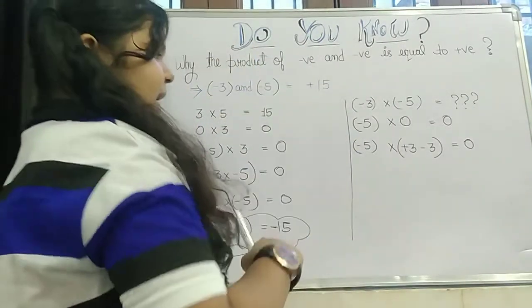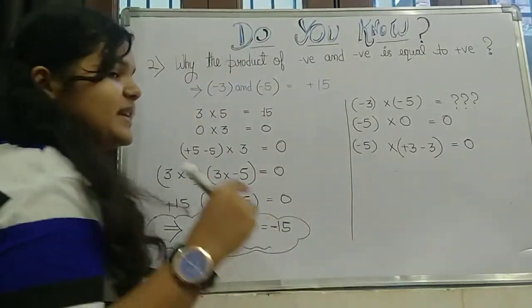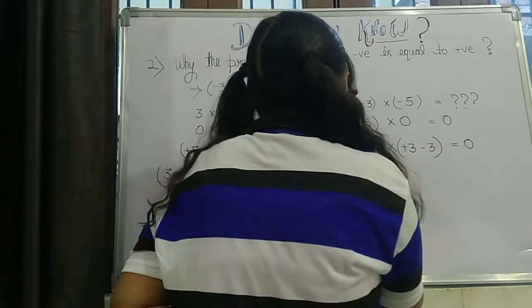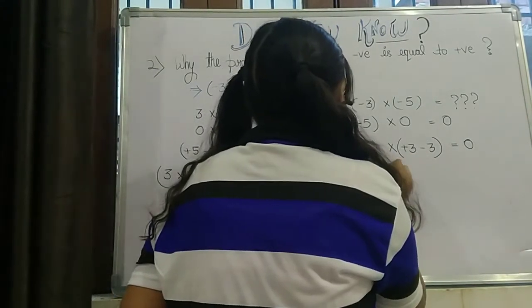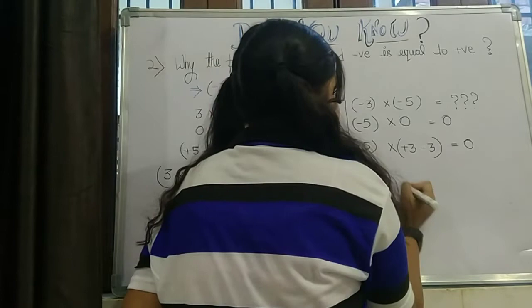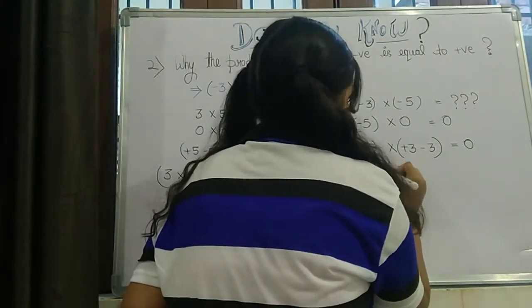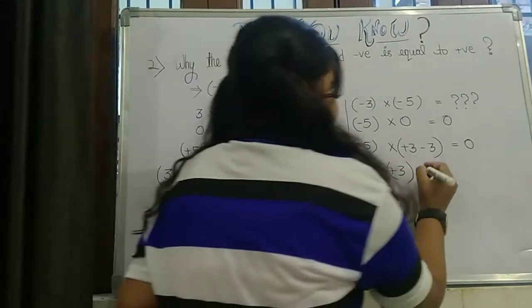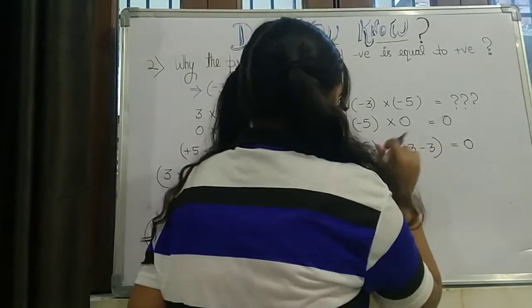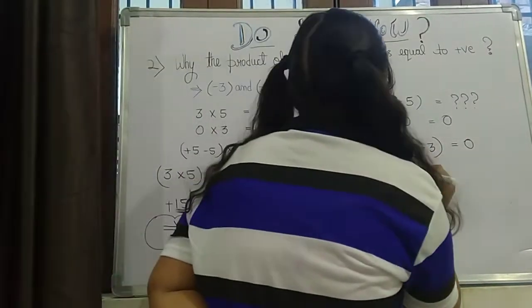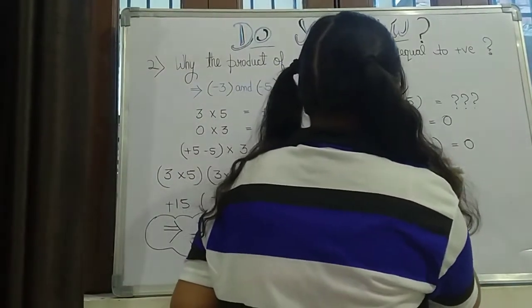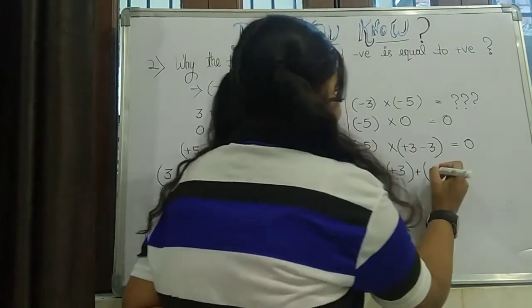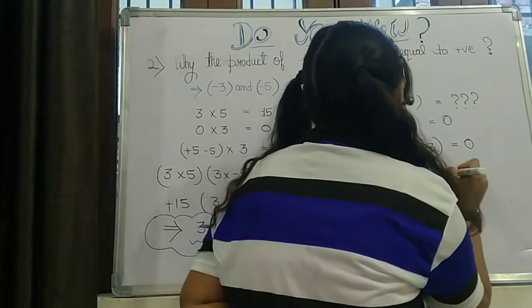And in the same manner, when we will perform the distributive property here, it will become minus 5 into positive 3, then we will add it and it will become minus 5 into minus 3.